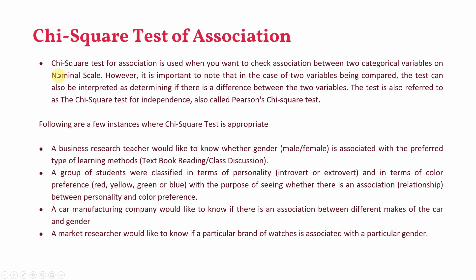Chi-square test is appropriate when variables are categorical on nominal scale — for instance, gender, personality type like introvert or extrovert, or color. A business research teacher would like to know whether gender is associated with the preferred type of learning method like textbook reading or class discussion. Similarly, students classified by personality (introvert or extrovert) and color preference (red, yellow, green, or blue) can be examined for association between personality and color preference.